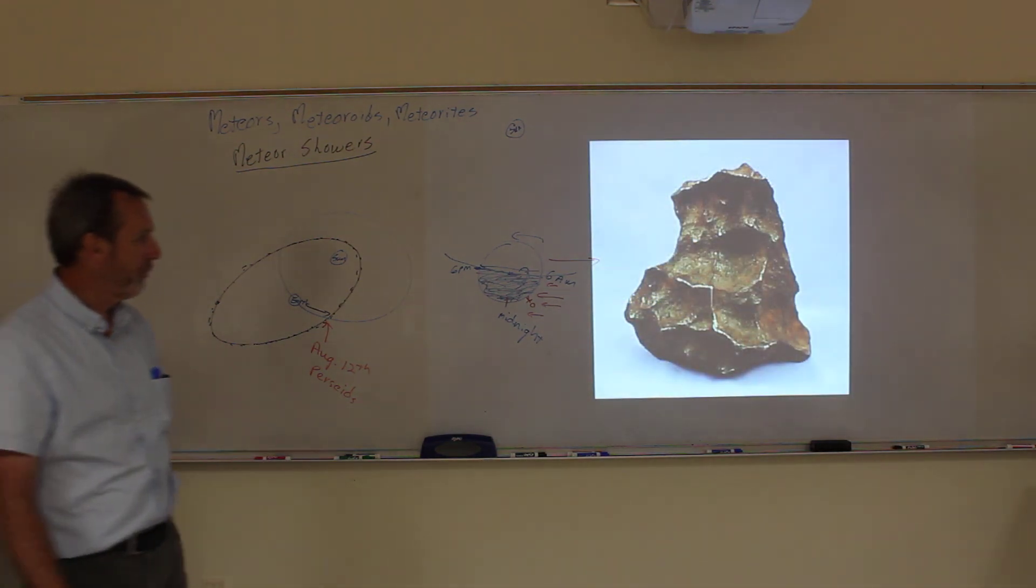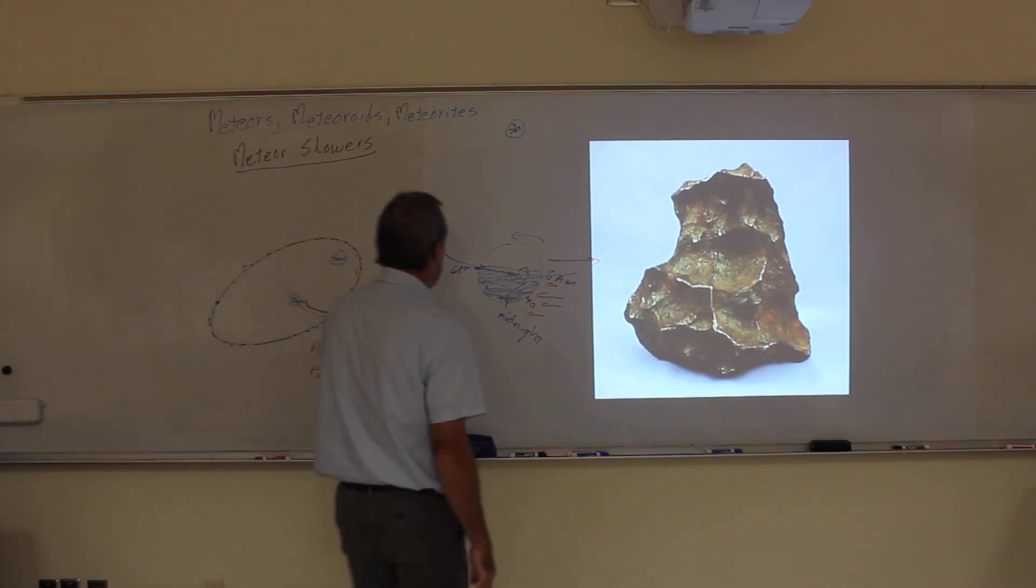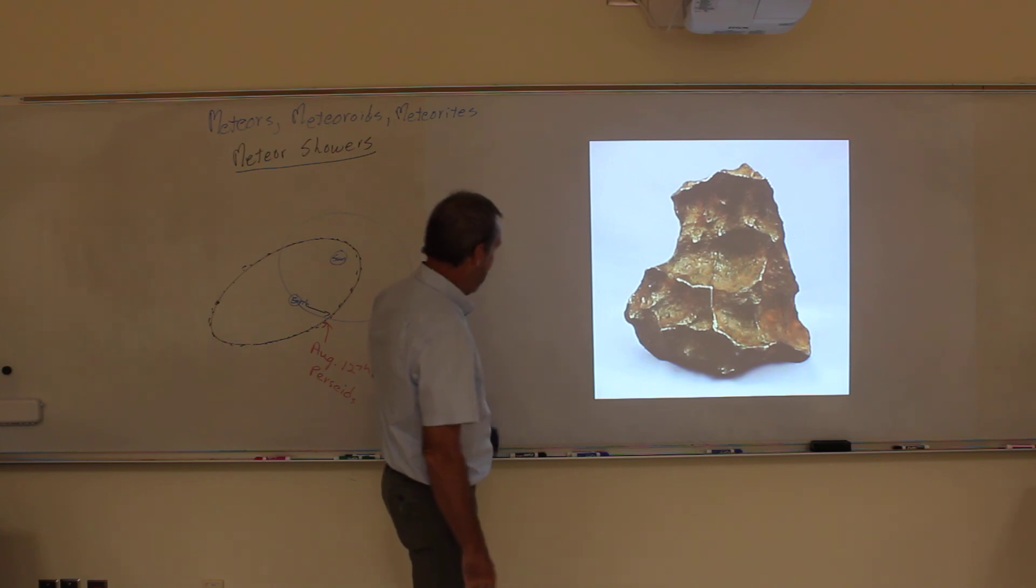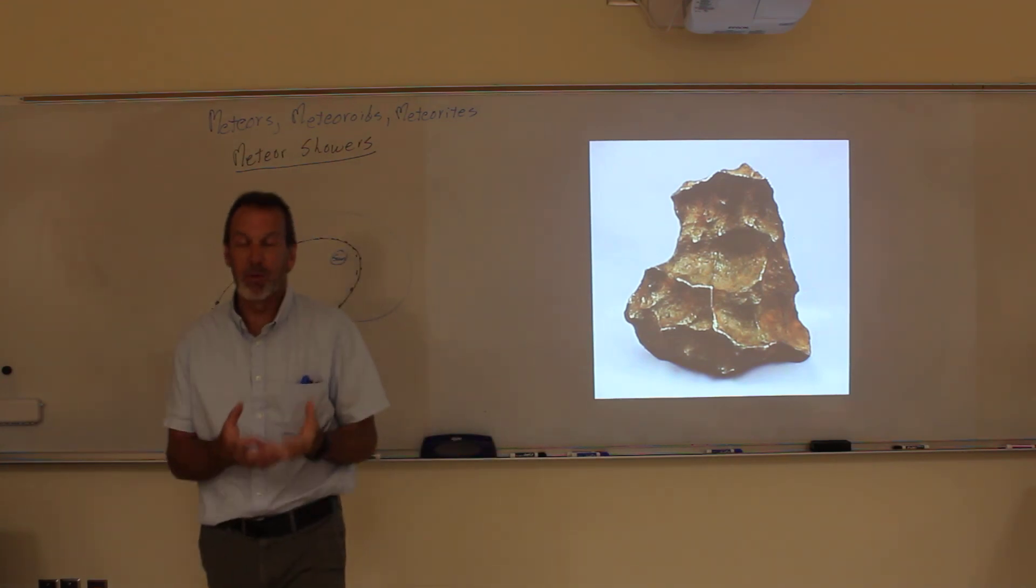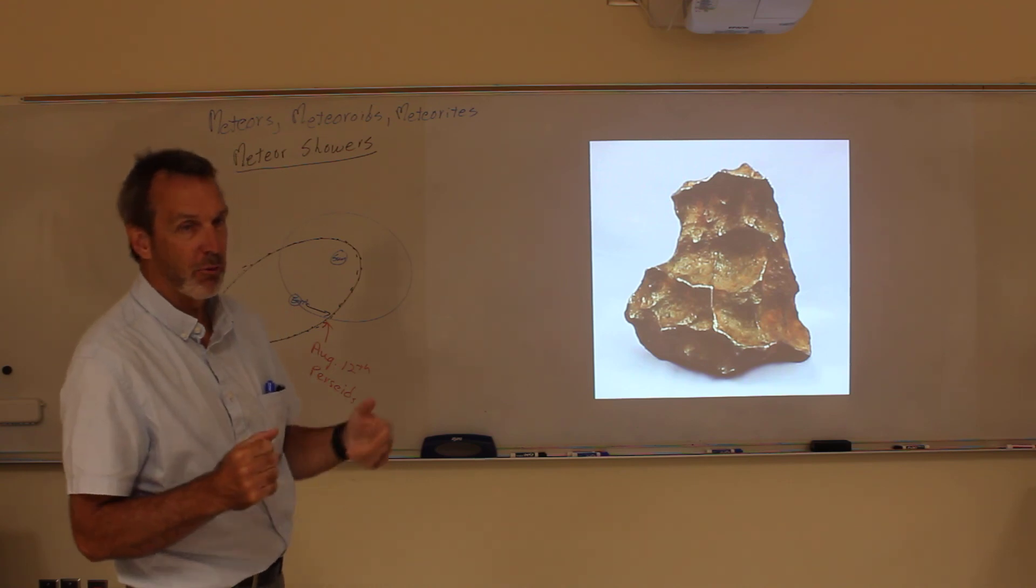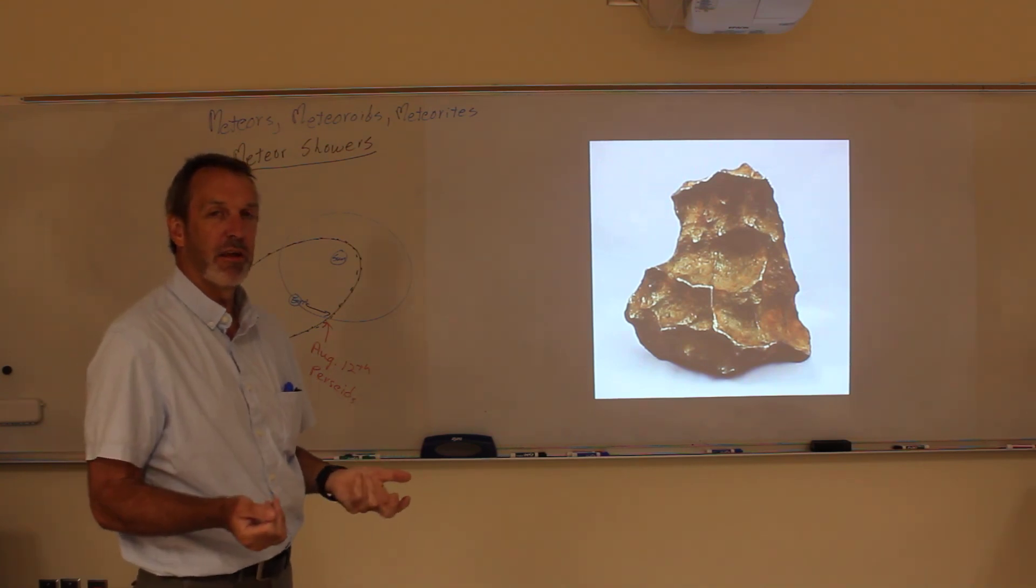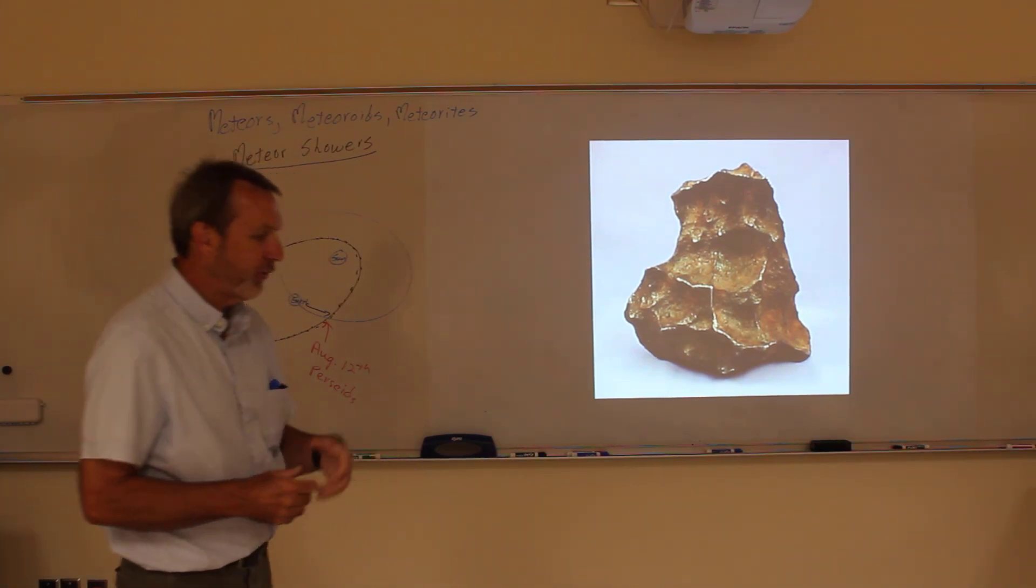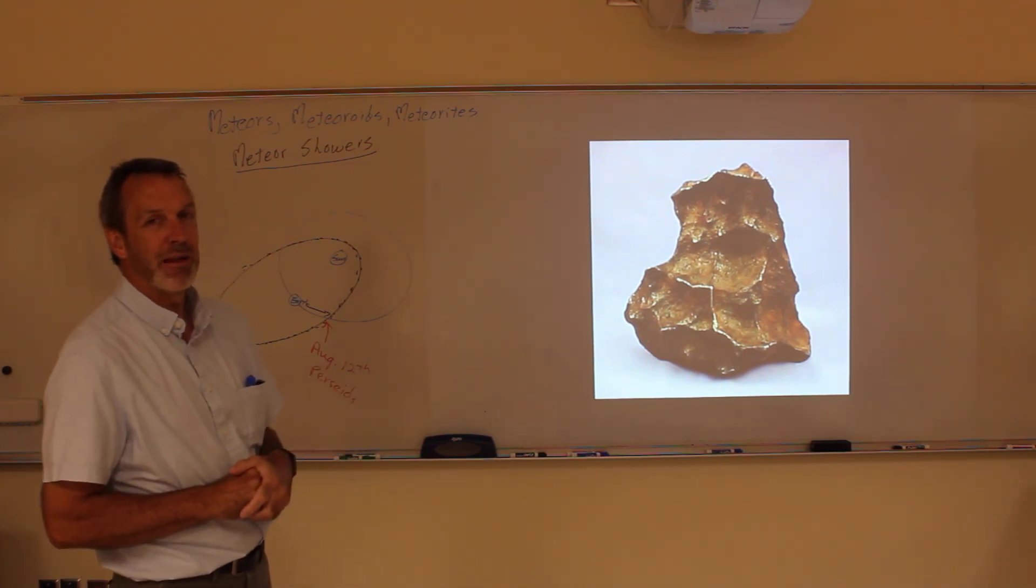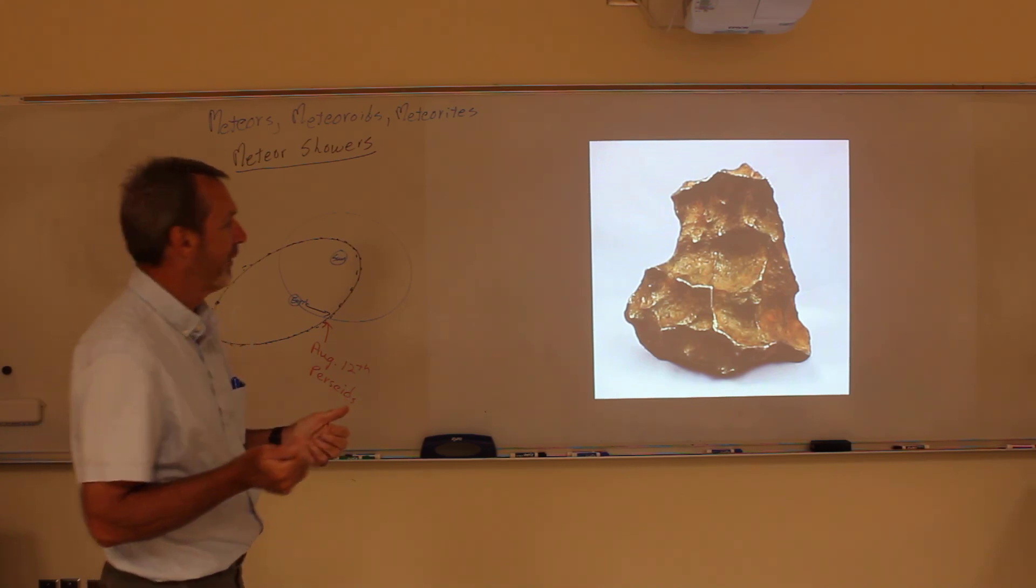Alright, here's a meteorite, a picture of a meteorite. Most meteorites are very heavy in iron and nickel content. If you go pick them up, you're like, whoa, that's really heavy, and a magnet will stick to them. In fact, that's one of the quick ways to test if you have a meteorite. If you go find a rock, you go, oh, this looks like a meteorite. If it's not magnetic, a metal magnet does not stick to it, it's probably not a meteorite.